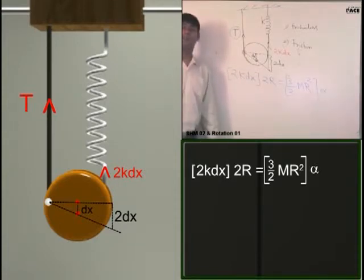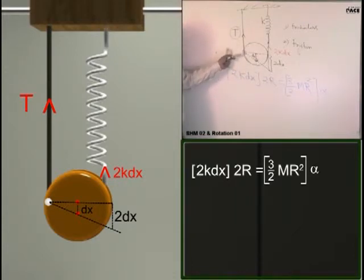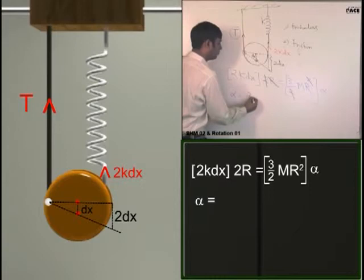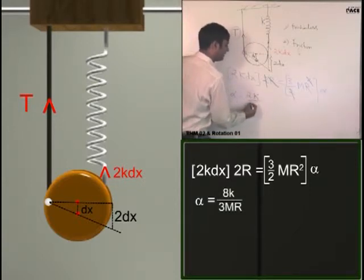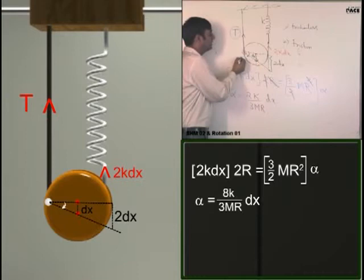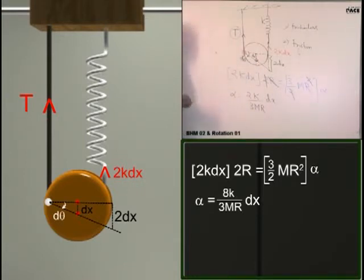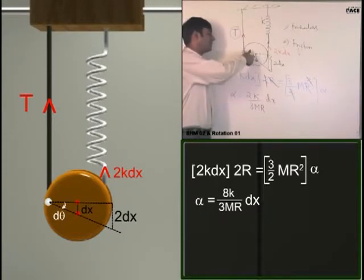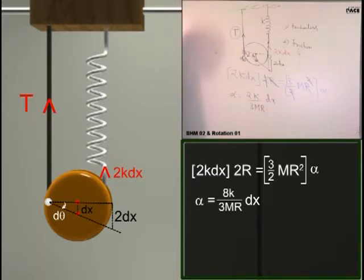That torque is equal to I alpha about fixed axis of rotation. This point, this axis is like almost fixed axis of rotation. Please understand this axis perpendicular to the plane. Now if I solve alpha, alpha is equal to 2k by 3MR into dx. I have taken angle rotated is d theta about this axis. Angle rotated is clockwise. I rotated it clockwise and the torque is anticlockwise. Are they oppositely directed? Yes or no?